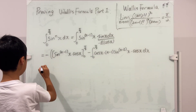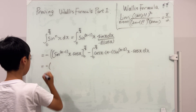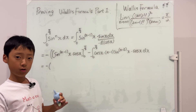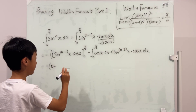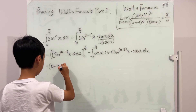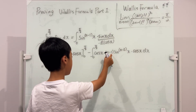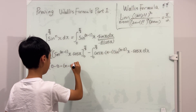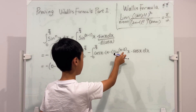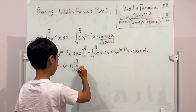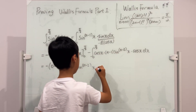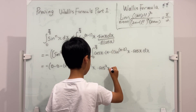Now this is equal to negative — well, we plug in π/2: the first thing, sine^(n−1)(π/2), is 1, and the second thing, cosine(π/2), is 0, so the whole thing is 0. Minus: plug in 0 — sine(0) is 0 already, so it's still 0. And then minus: we can take n minus 1 outside of the integral, and then sine^(n−2)(x) stays the same.